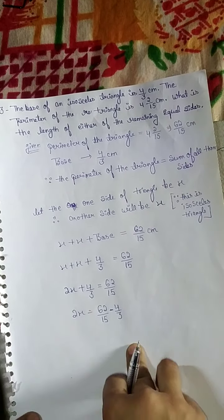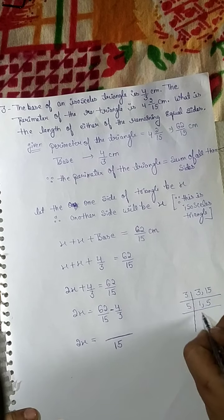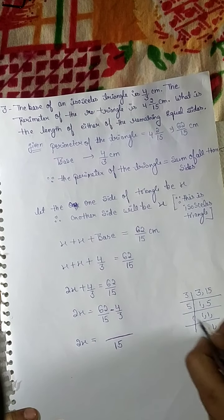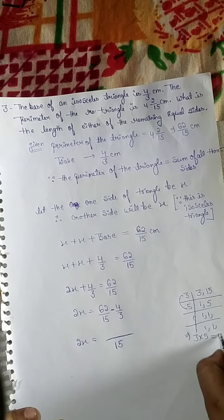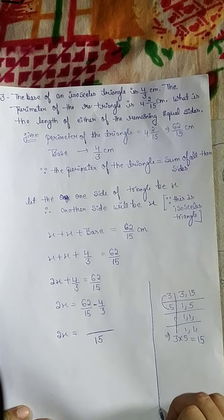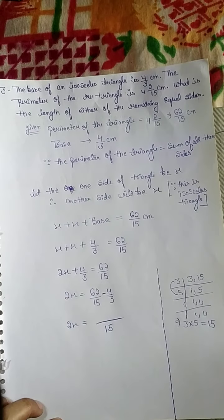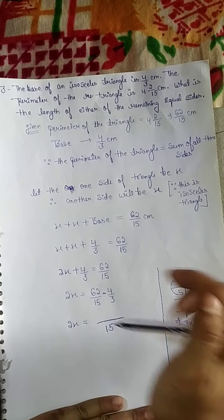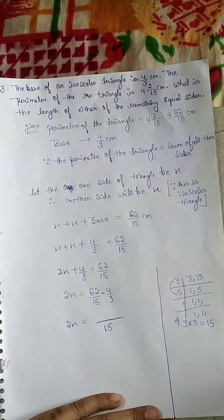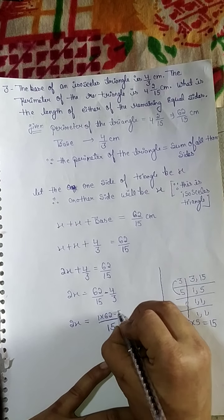Now we solve the right-hand side. The LCM of 3 and 15: 3 times 5 is 15, so LCM of 3 and 15 is 15. Therefore: 15 divided by 15 is 1, so 1 into 62; and 15 divided by 3 is 5, so 5 into 4 equals 20. So: 2X equals 62 minus 20 upon 15.